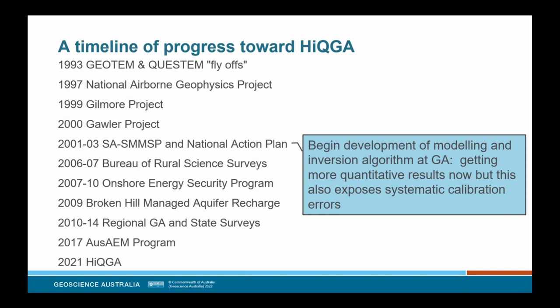With the development of inversion programs, we were now getting much more quantitative results that adhered to the true physics. However, inversion also began to expose serious systematic calibration errors in electromagnetic data and showed the importance of accurate ancillary information such as system geometry. From here we continued to develop our algorithm to handle these systematic errors by identifying and correctly modeling the error sources rather than sweeping them under the carpet or massaging the data.